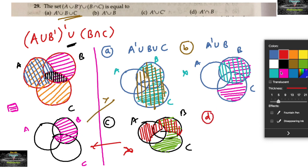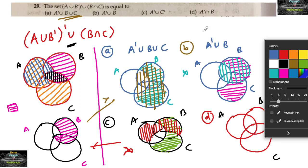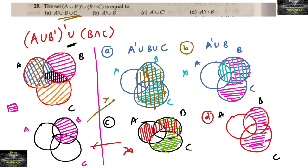Then coming to option D: A complement intersection B. A complement means other than A. And intersection with B — B is here. So the common part of A complement and B is only this part. But this is also not matching according to the expected answer, so option D is also not correct.